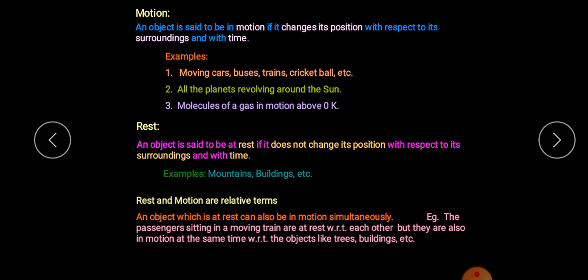Consider a bus with many passengers — all passengers are at rest with respect to each other inside the bus. But if you look from outside, you can say the passengers are in motion. So an object can be at rest and in motion at the same time — that is why rest and motion are called relative terms.